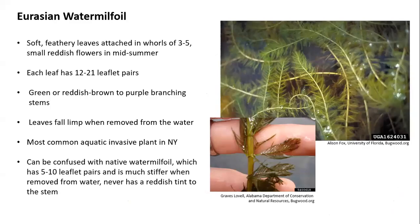Starting with Eurasian water milfoil — the most common aquatic invasive plant in New York, pretty widespread throughout the Finger Lakes region. It has very soft, feathery leaves attached to the stem in whorls of three to five, and they develop small reddish flowers in midsummer. Each one of those leaves has 12 to 21 leaflet pairs, and they are green or reddish brown to purple. When the plant is pulled out of the water, the leaves will fall limp down to the side of the stem.